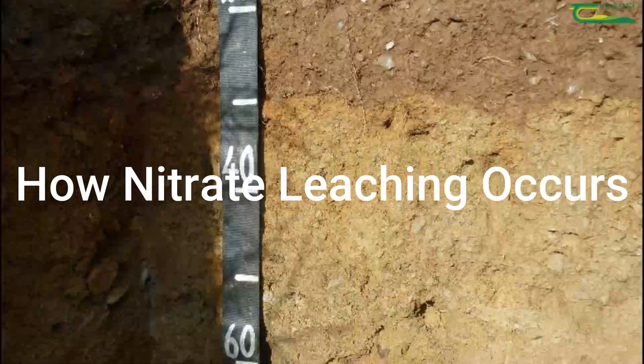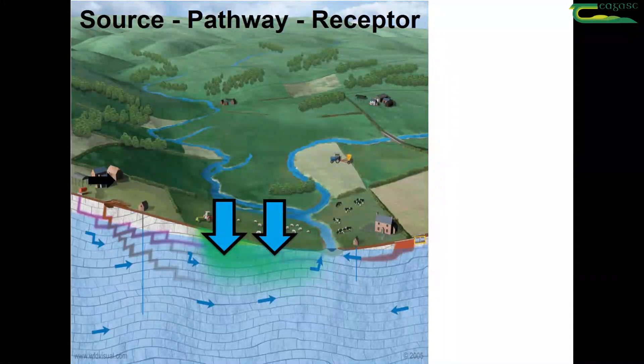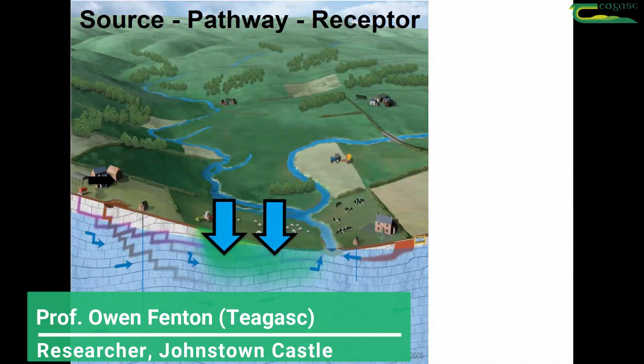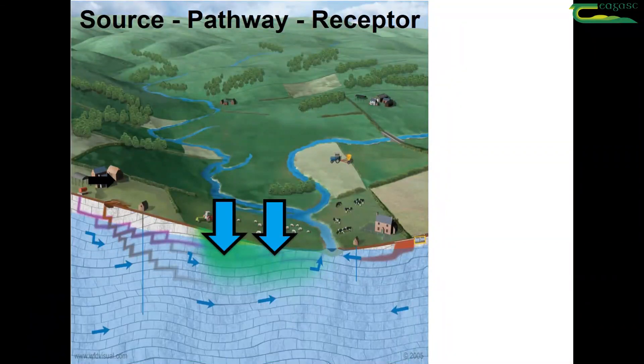There's a concept of source — where the nutrients are coming from — pathway, where do they travel, and then what's the impact: where do these nutrients eventually end up.